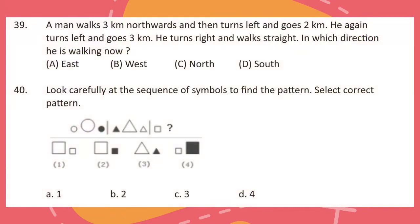Question 39: A man walks 3 kilometers northwards and then turns left and goes 2 kilometers. He again turns left and goes 3 kilometers. He turns right and walks straight. In which direction is he walking now?